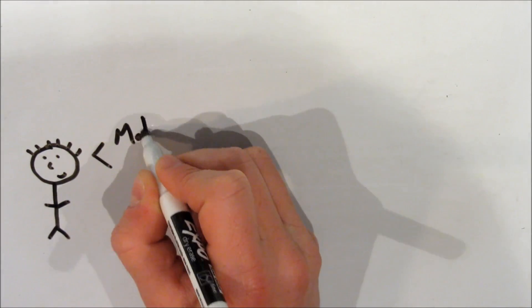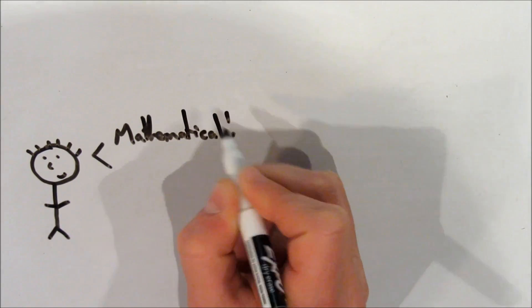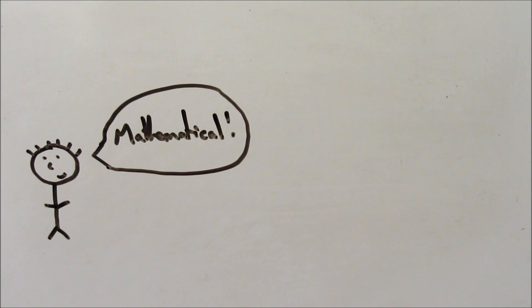I hope this video helped you understand how to find the derivative of a function using the definition of a derivative. If you're still confused, check out my previous video explaining what this formula really means. I also made a video with examples using the alternate definition of a derivative. If you still have any questions, feel free to post them in the comments and I'll try my best to help.